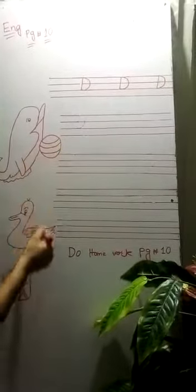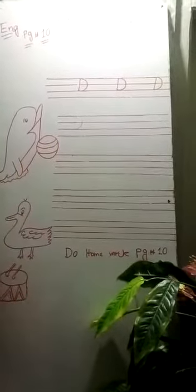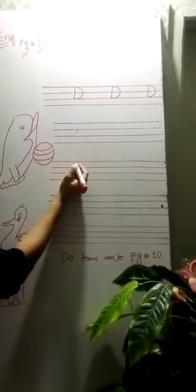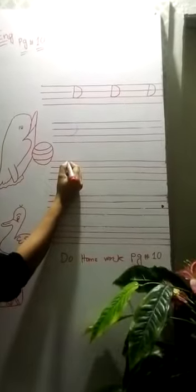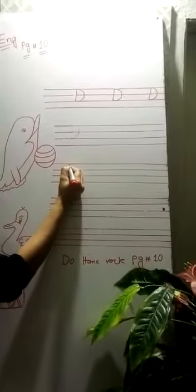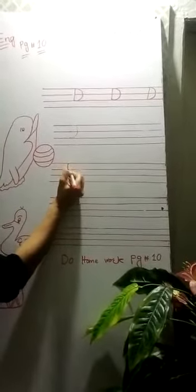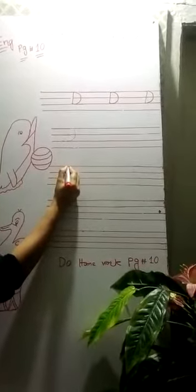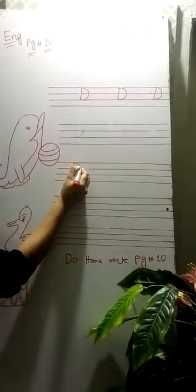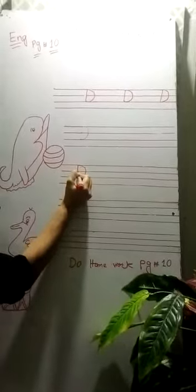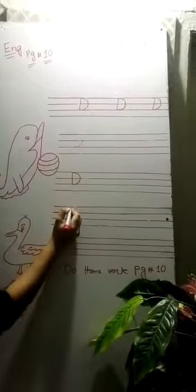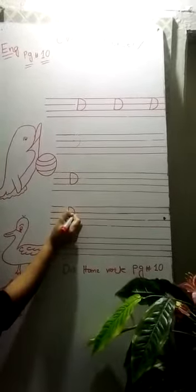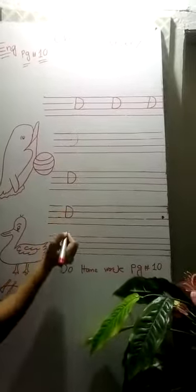Start writing. Pick your pencil. Sharpen your pencil. Start from the top. Draw a standing line, then go up and then draw a curve. Draw a standing line and draw a curve. This is D.